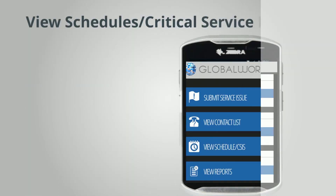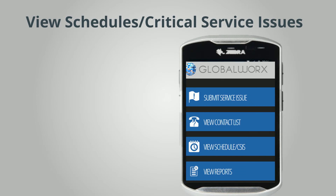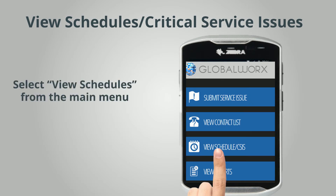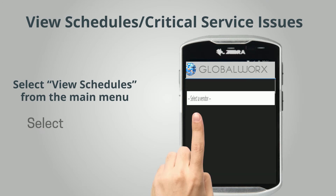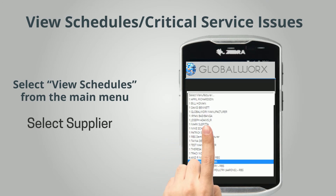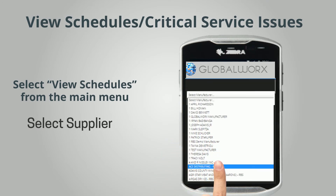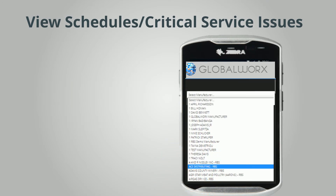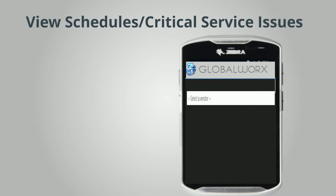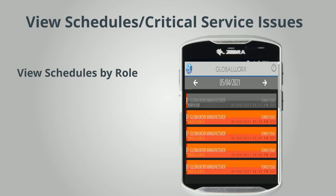View Schedules and Critical Service Issues. Select View Schedules from the main menu, then select a supplier. The schedule is defaulted to view all daily schedules and service issue tickets. Schedules are listed by roles: delivery, merchandising, and service issue.